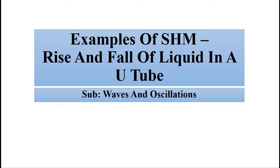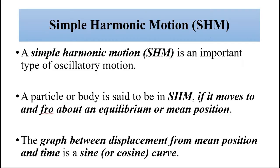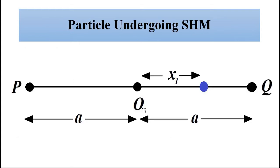Before that, I would like you to please watch all the previous videos related to simple harmonic motion so that you understand this in a better way. Simple harmonic motion is basically an oscillatory movement — a to-and-fro movement of an object about an equilibrium or mean position — between two extreme points about a middle or reference or mean position.